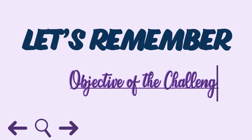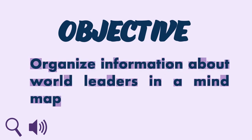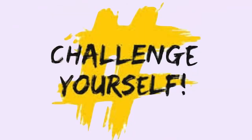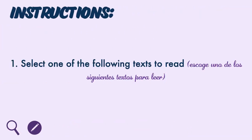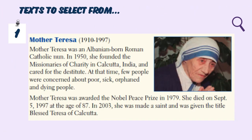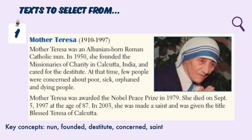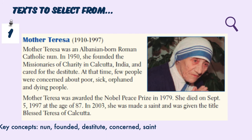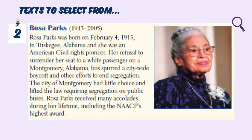Now let's remember the objective: to organize information about world leaders in a mind map. For the challenge, instruction number one is to select one of the following texts to read. Text one is about Mother Teresa — key concepts: nun, founded, destitute, concern, and saint. Text two is about Rosa Parks — key concepts: pioneer, refusal, surrender, spurred, boycott, segregation, and accolades.